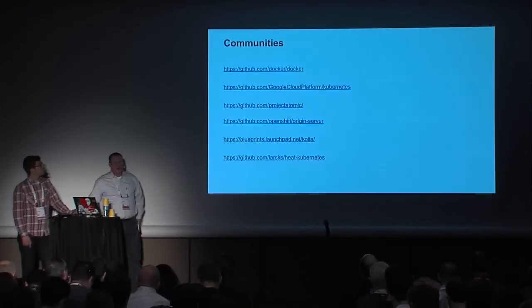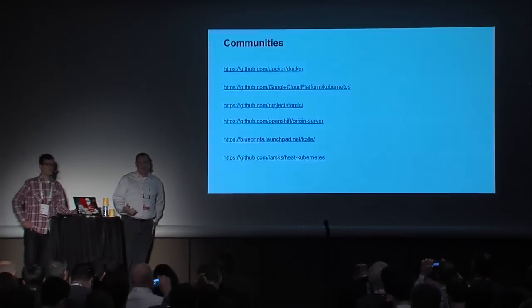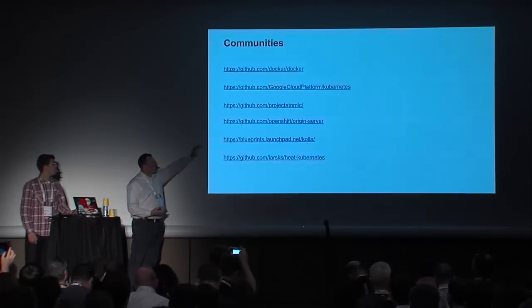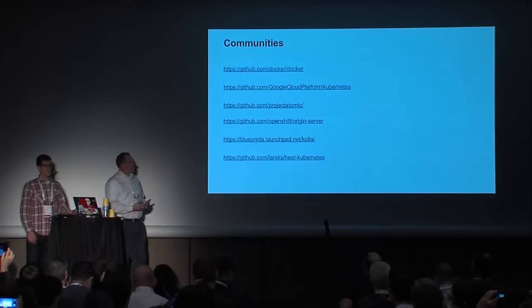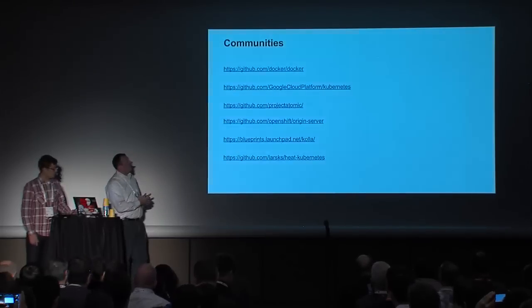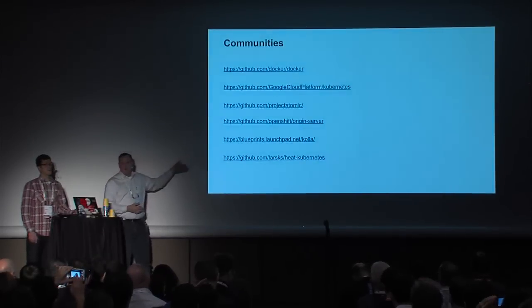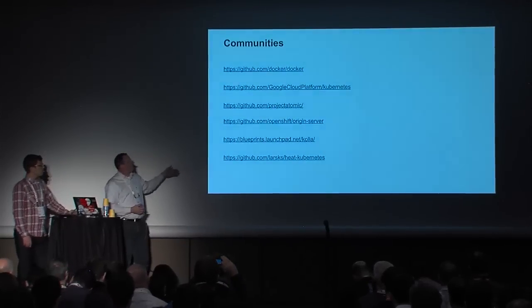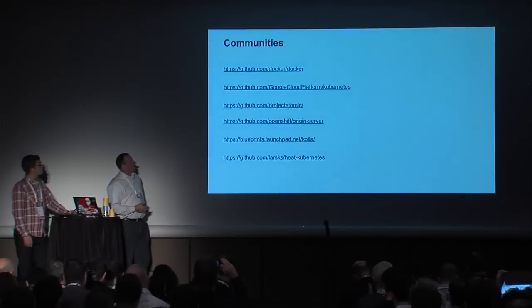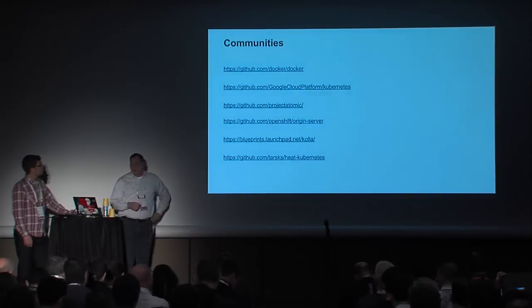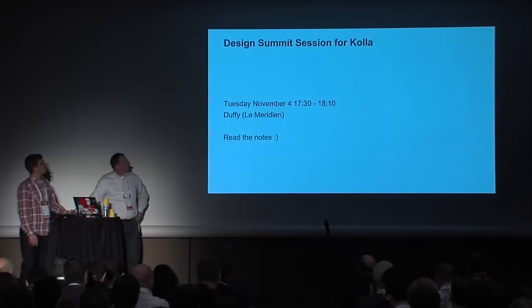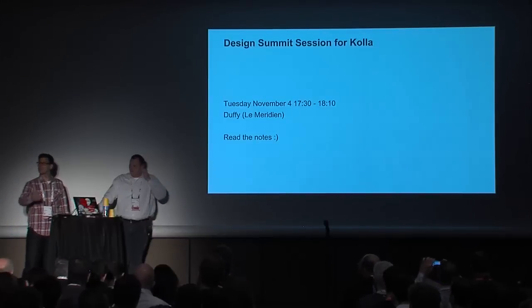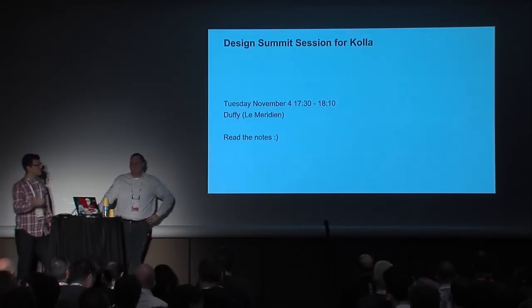All the stuff we're doing is upstream — it's important for Red Hat to do things in an upstream, transparent way. It's Project Kala — here are the blueprints with all the different things we're working on. Project Atomic, the stuff Lars has written for Heat and Kubernetes to provision those types of images. The Kubernetes stuff upstream is hosted on Google Cloud Platform, and Docker IO has their own Git repo. The design summit session notes are available — jump on IRC and the mailing list.